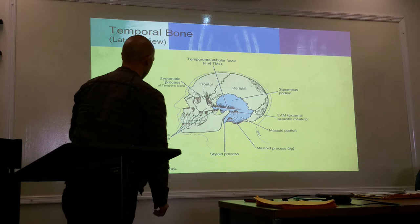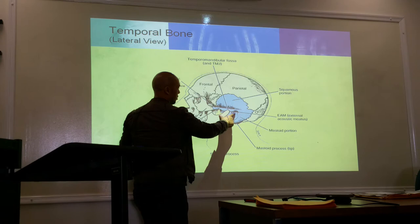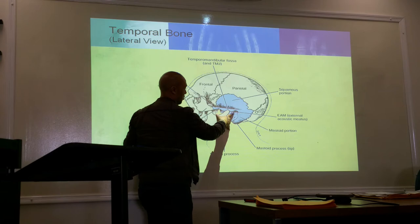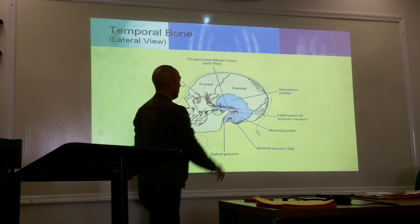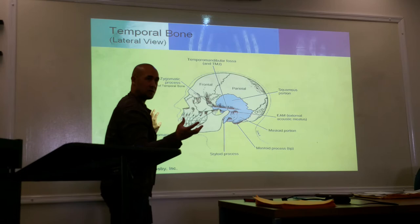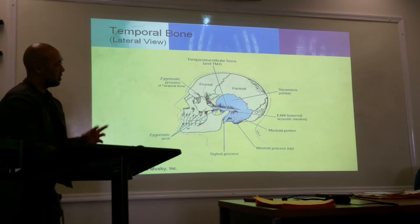The temporal bone also has a squamous portion. There is an opening into the inner ear — the outer part is the external auditory meatus, which is one of the key landmarks used in skull positioning. The inferior part, the mastoid portion, is very porous and contains mastoid air cells.